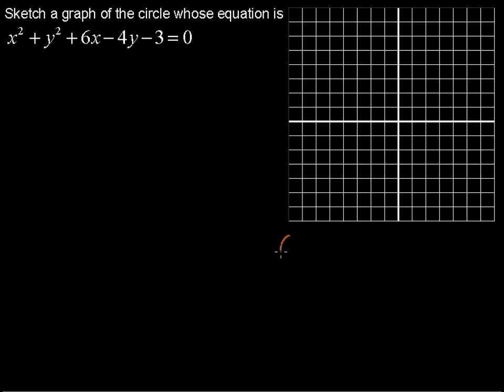We can also write it as x minus h quantity squared plus y minus k quantity squared equals r squared, where the point h,k is the center of the circle and then defining that circle by its radius r equals the radius.